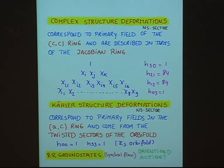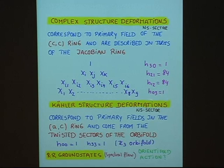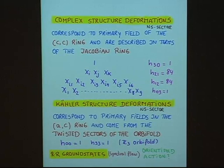In the Neveu-Schwarz sector, we have the (c,c)-ring which describes primary fields in terms of the Jacobian ring, describing the complex structure deformations. The Jacobian ring is the product of all Z₃-invariant polynomial combinations. The first entry describes the holomorphic three-form; the (2,1)-forms; the (1,2)-forms; and the complex conjugate of the holomorphic three-form. We also have Kähler structure deformations from twisted sectors of the orbifold. Since we have a Z₃ orbifold, the twisted sectors are simple, with only H⁰⁰=1 and H³³=1. States in the Neveu-Schwarz sector are related to states in the Ramond-Ramond sector by spectral flow.